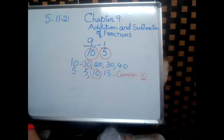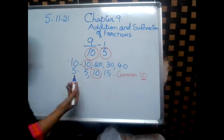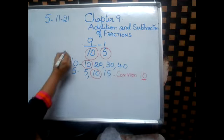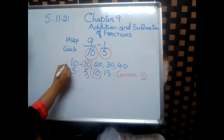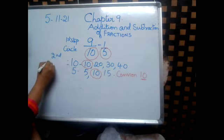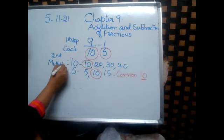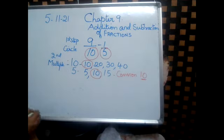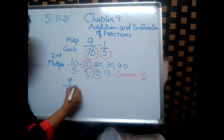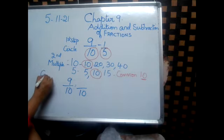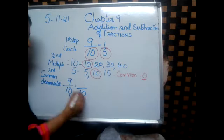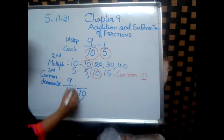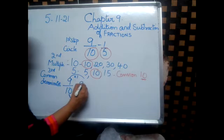This is called the common denominator. We found the common. The first step is to circle it. The second step is to find the multiples. The third step is to use the common denominator. So, 9 by 10 — we got the common denominator 10. How did we get 10? 10 times 1 is 10. So, multiply the numerator also one time: 9 by 10 is equal to 9 by 10.